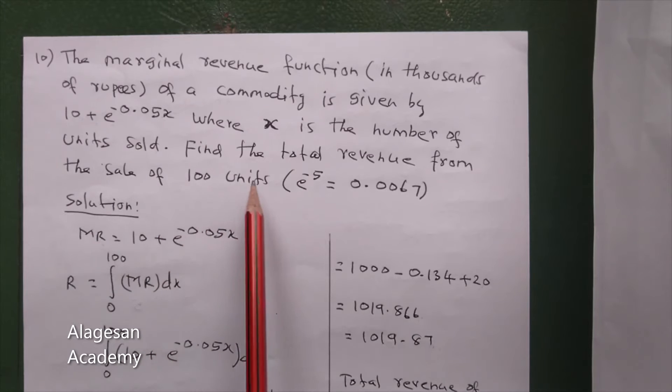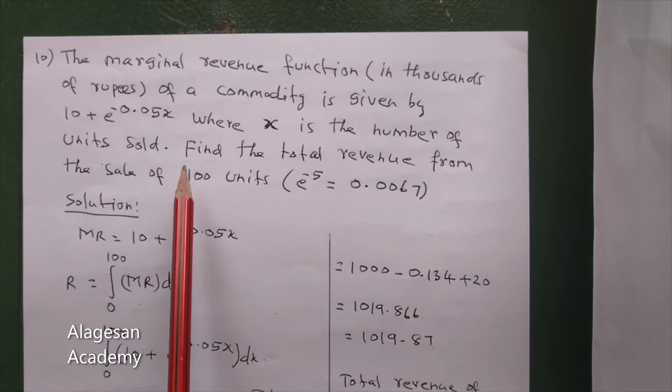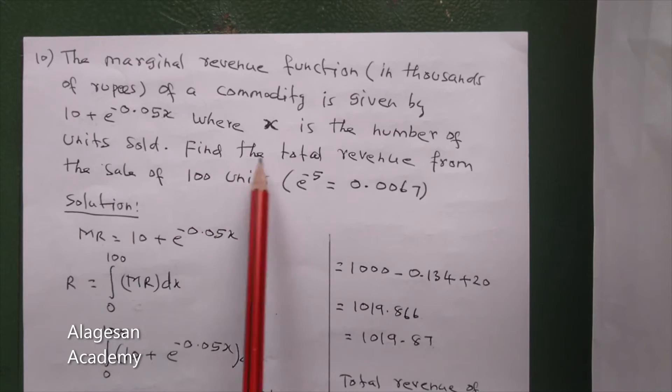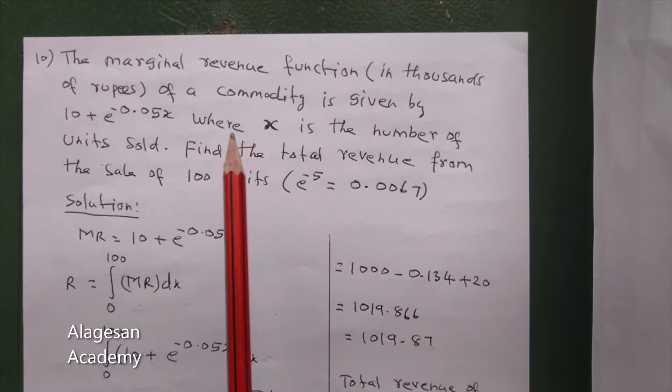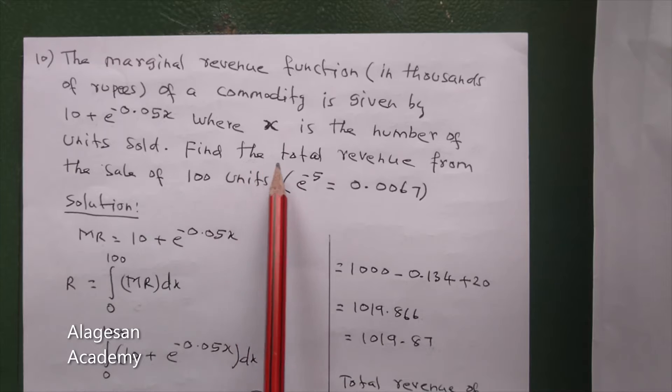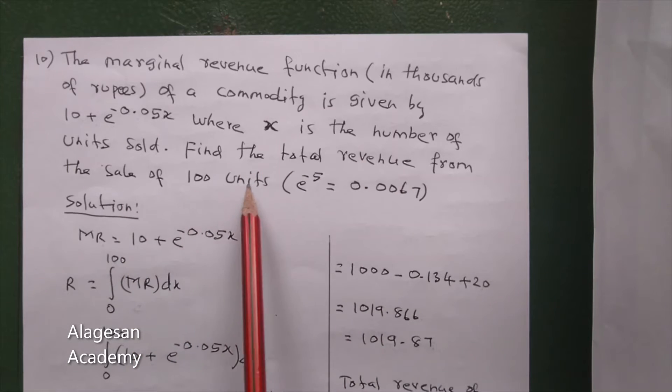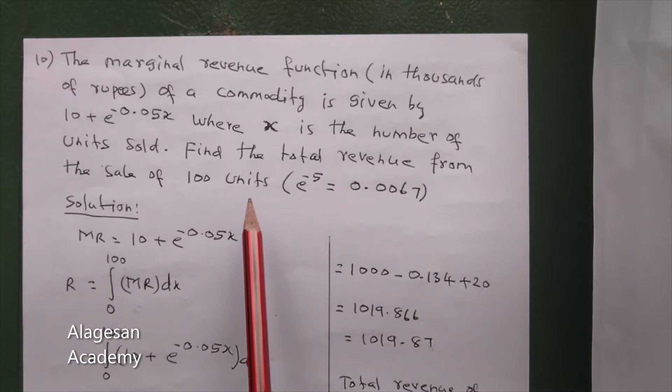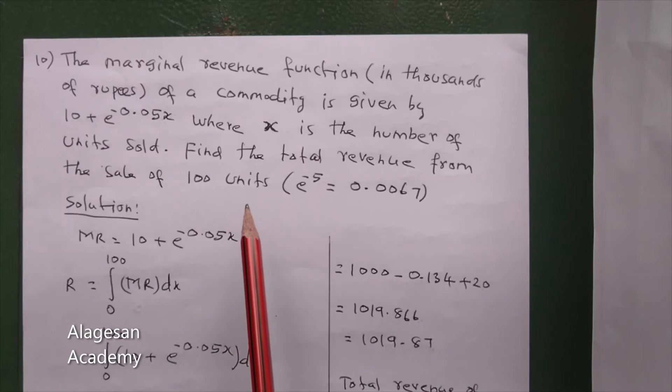In the problem, use the definite integral with limit 0 to 100. To find the total revenue from the sale of 100 units, R equals 0 to 100, MR dx.